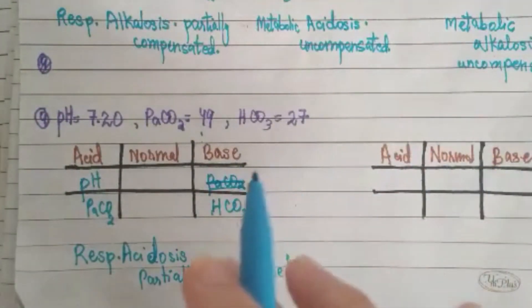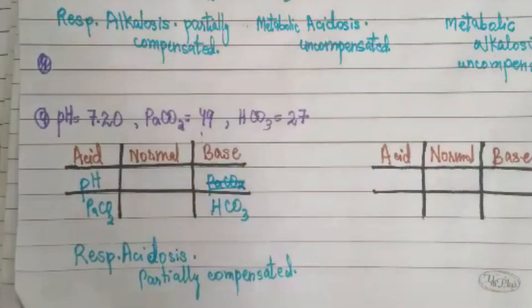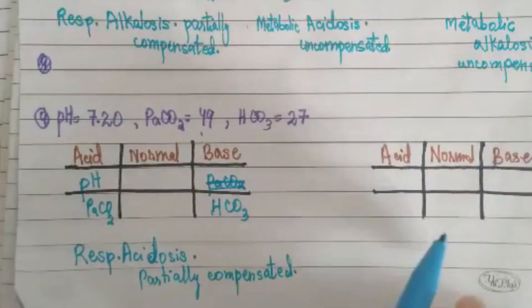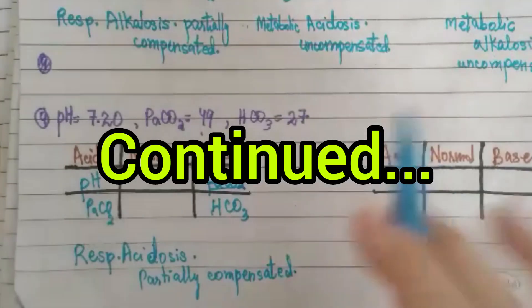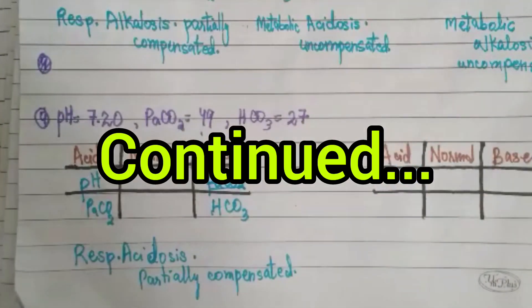Because it is carbon dioxide causing the condition and the bicarbonate has partially compensated, it is partially compensated respiratory acidosis. In a future video we will see an exercise on fully compensated ABG. Thank you.